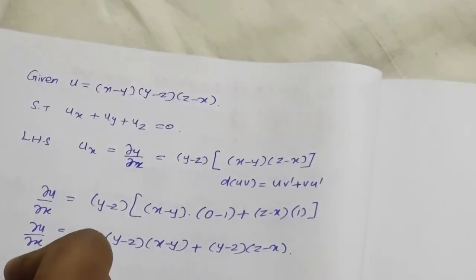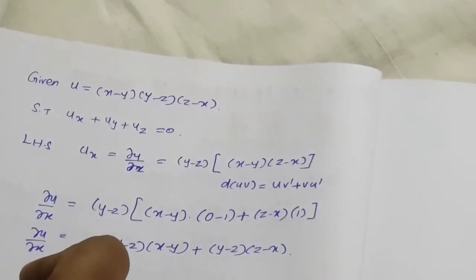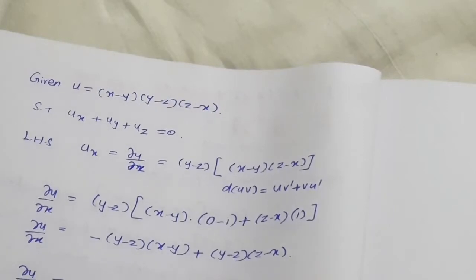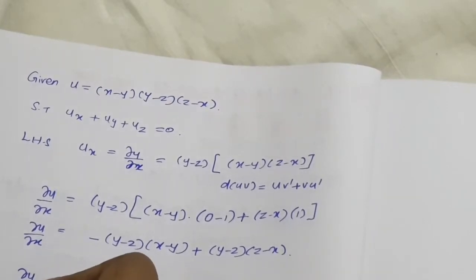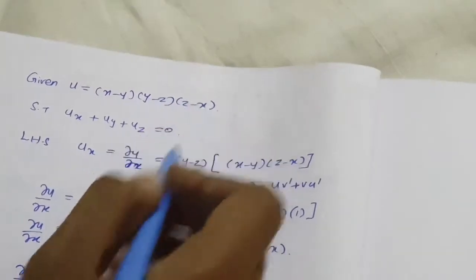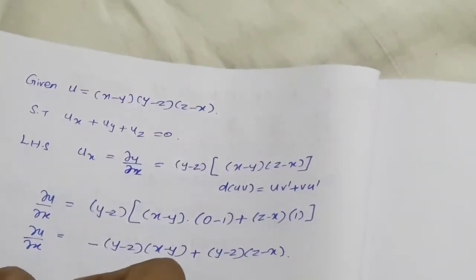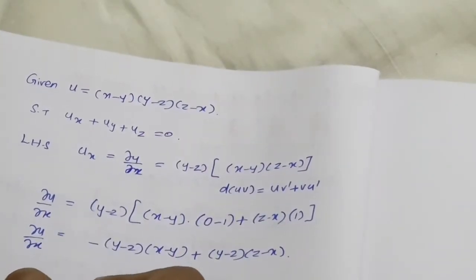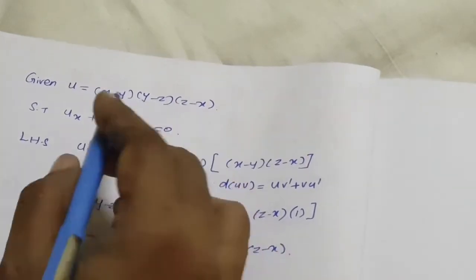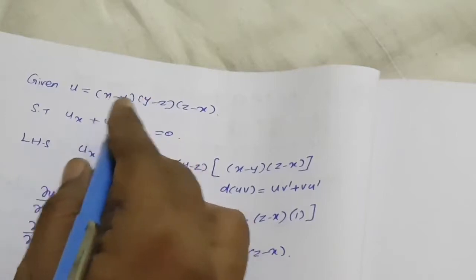Similarly, we can find the partial derivative of u with respect to y. When differentiating with respect to y, x and z are constants. So any term involving only x and z will be kept as constant.